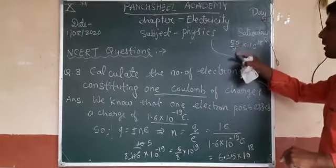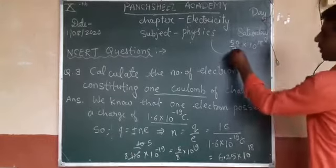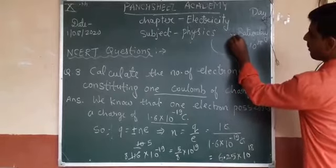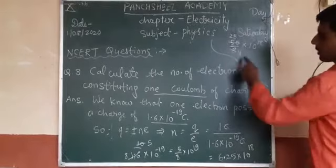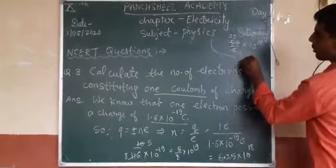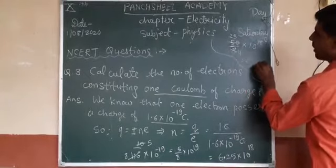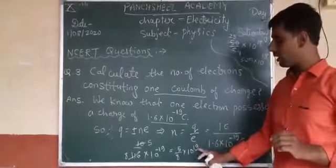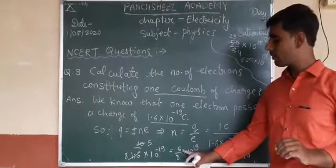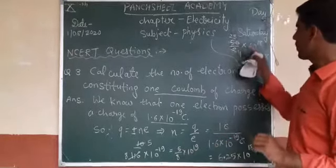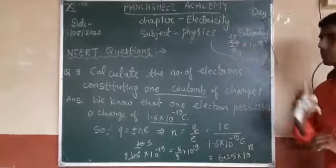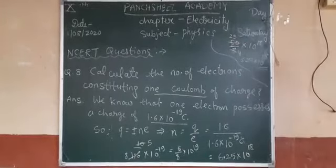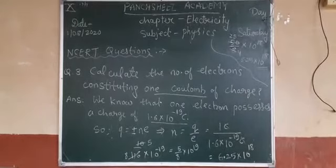Divide 50 by 8, which gives 6.25. So the result is 6.25 × 10¹⁸. This is the number of electrons in one coulomb of charge. Write down this result.